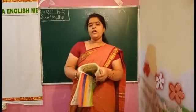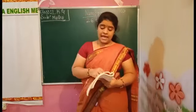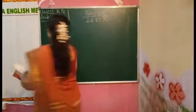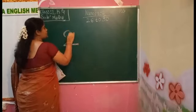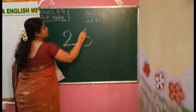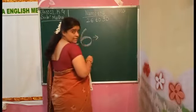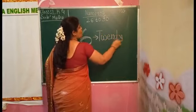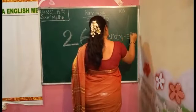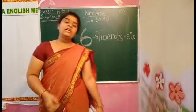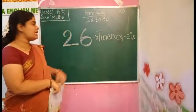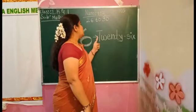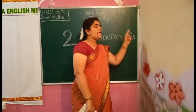Which number are they given here? They are given 26. The number 2, 6 — 26. The number name of 26 is T-W-E-N-T-Y-S-I-X. How we have to read the number 26? 2, 6, 26. The number name of 26 is T-W-E-N-T-Y-S-I-X. 26.